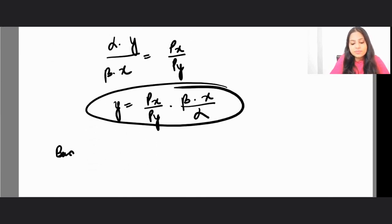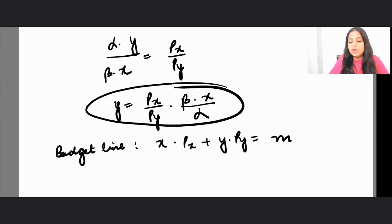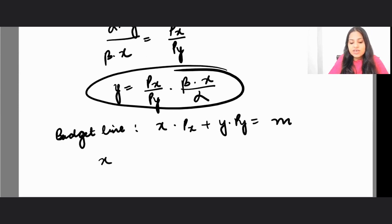Now how do you solve for the final x and y? We know that our budget line is given by x times px plus y times py equals m.